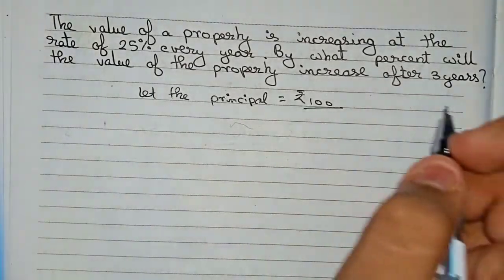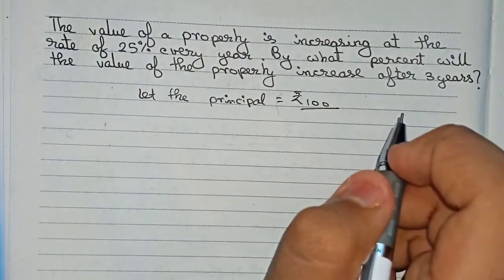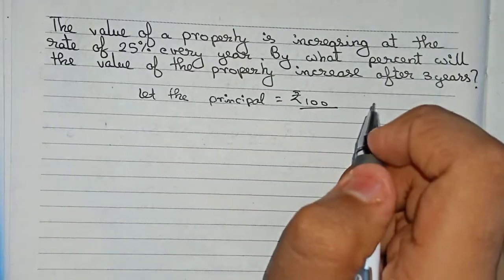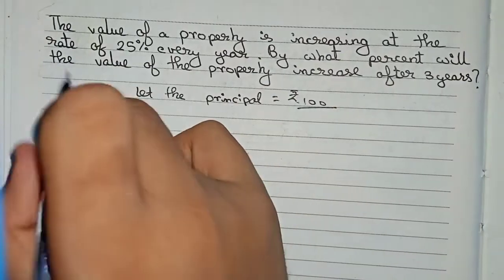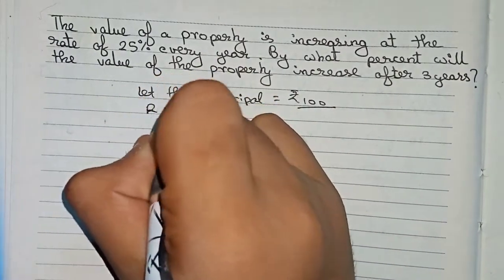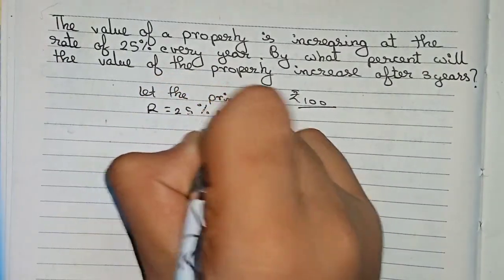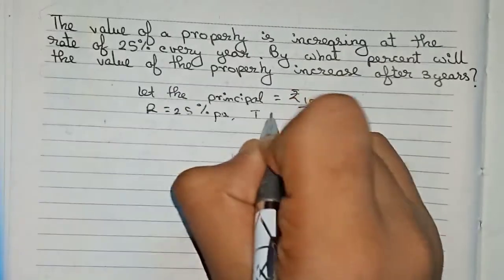First, we will find out the amount at the end of three years. The rate of interest is given as 25% per annum, and time is given as three years.